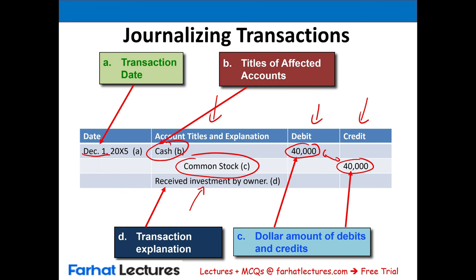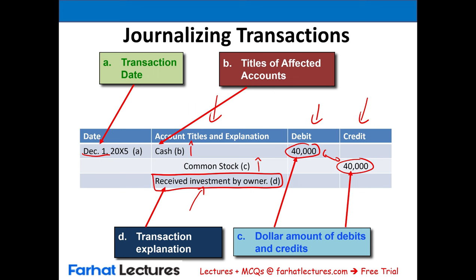So if someone looks at this transaction, they can read it and say this transaction is about money invested by the owner. We debited cash, meaning cash increased — cash is an asset. We credited common stock, meaning common stock increased. This is a completed journal entry. Notice that when we credit, we indent a little to indicate the account is being credited.